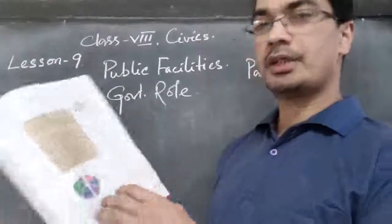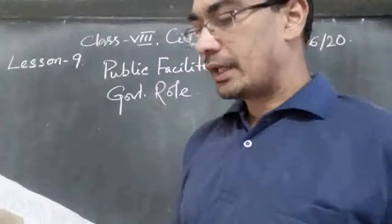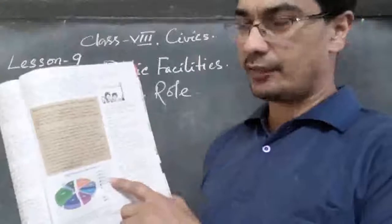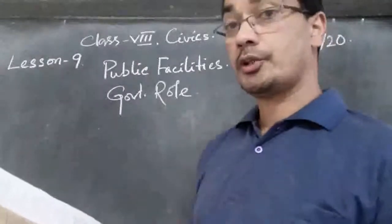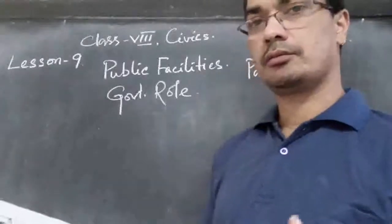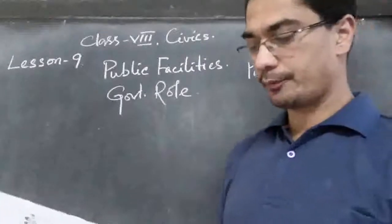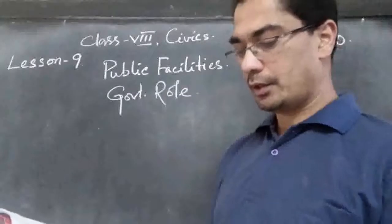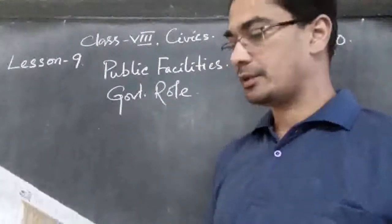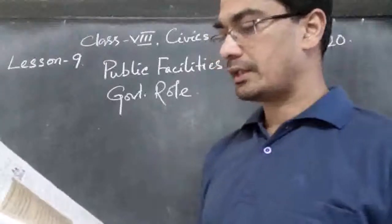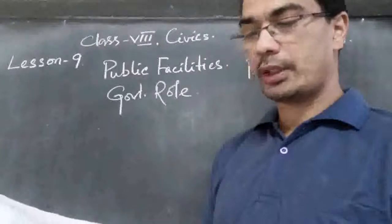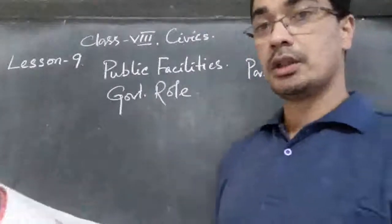Economic services include agriculture, industry, power, transport, and science and technology. This means the government spends money to help farmers improve their agriculture, to help factories and companies improve their production, to run the electricity department, to maintain transport services, and to support science and technology. Social services include education, health, rural development, and related areas.